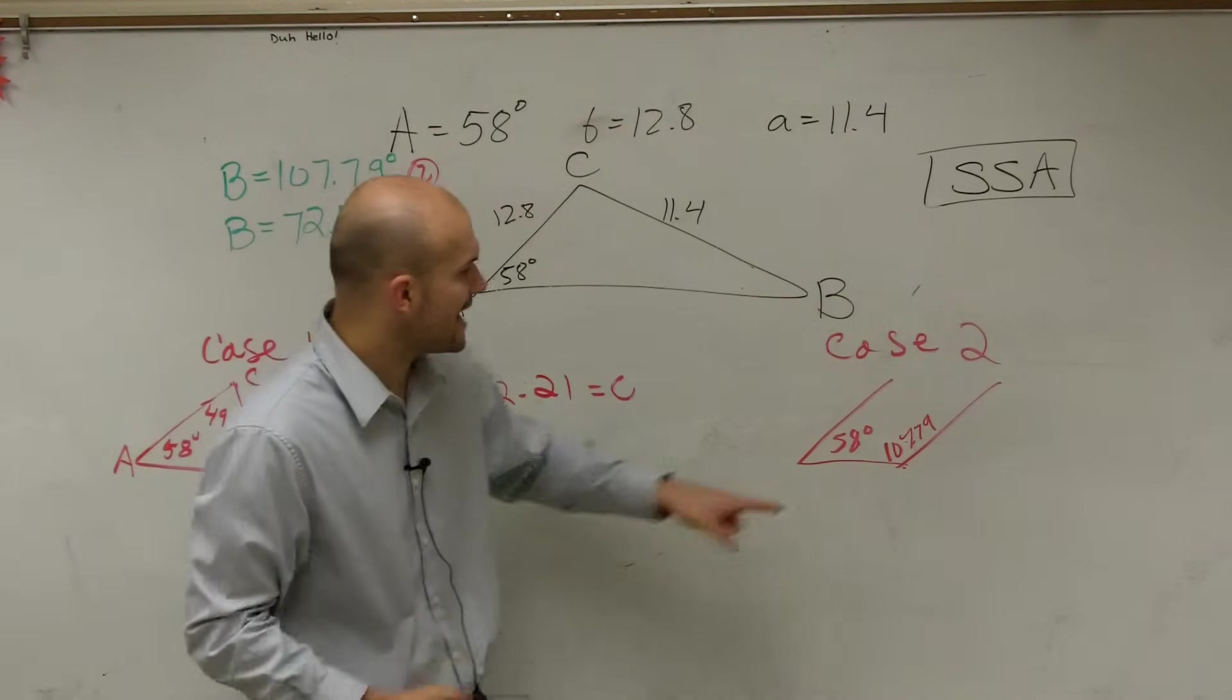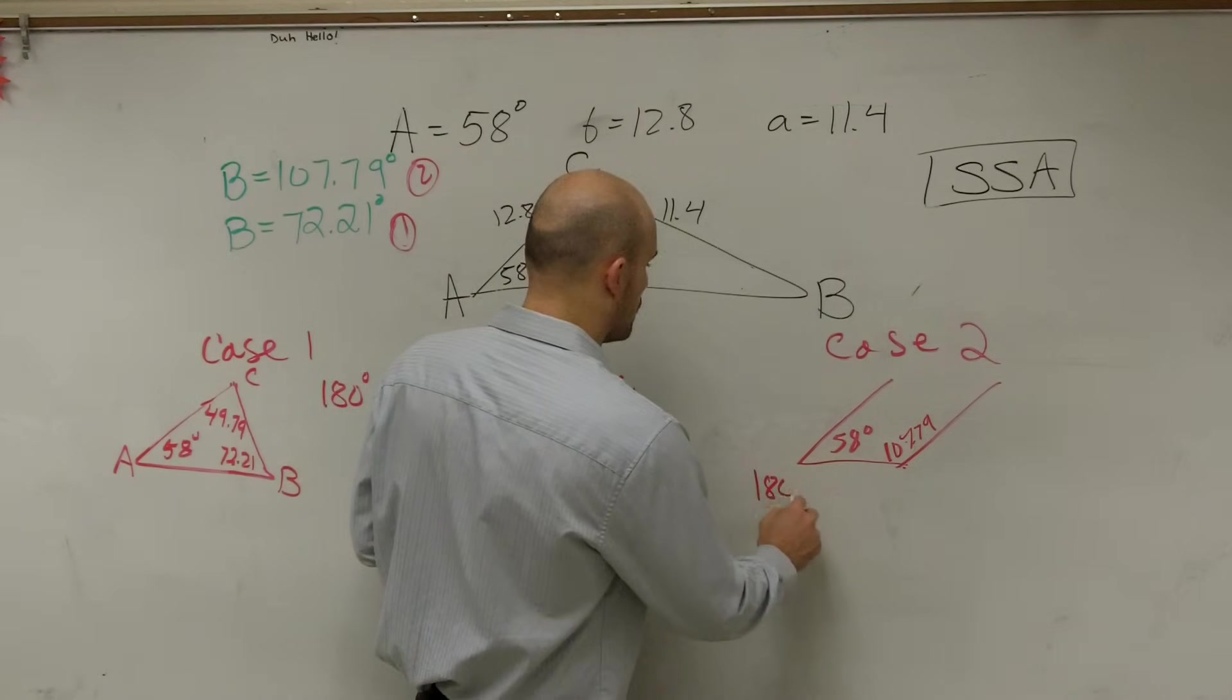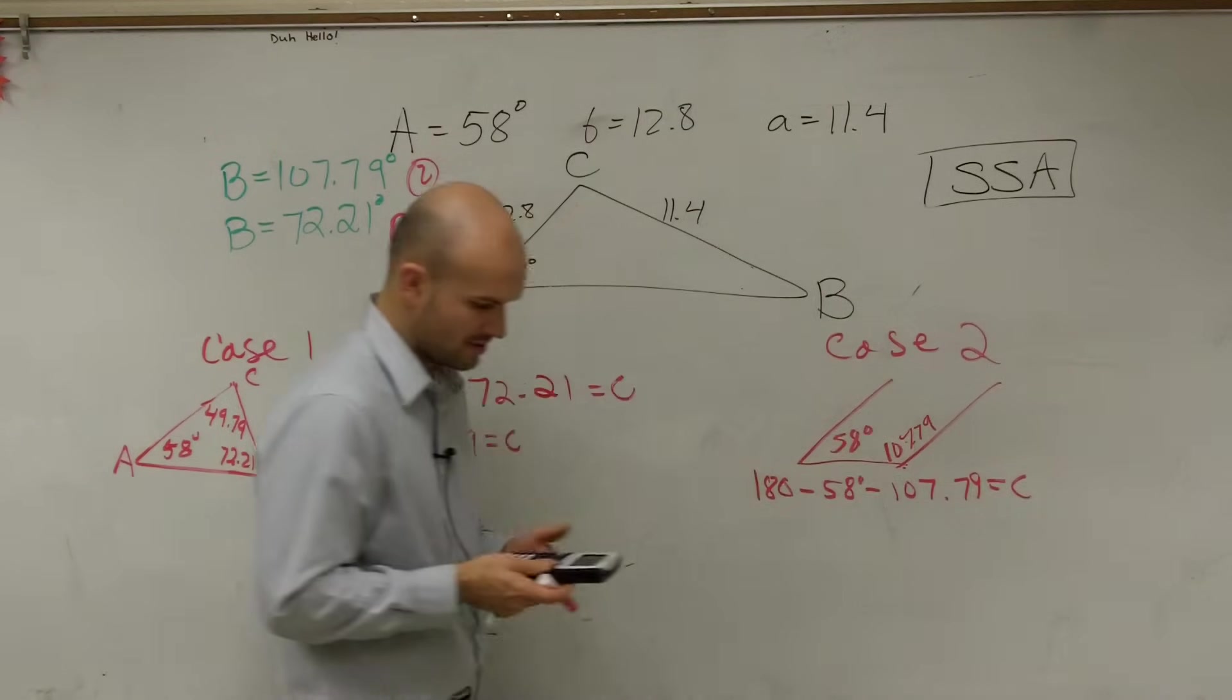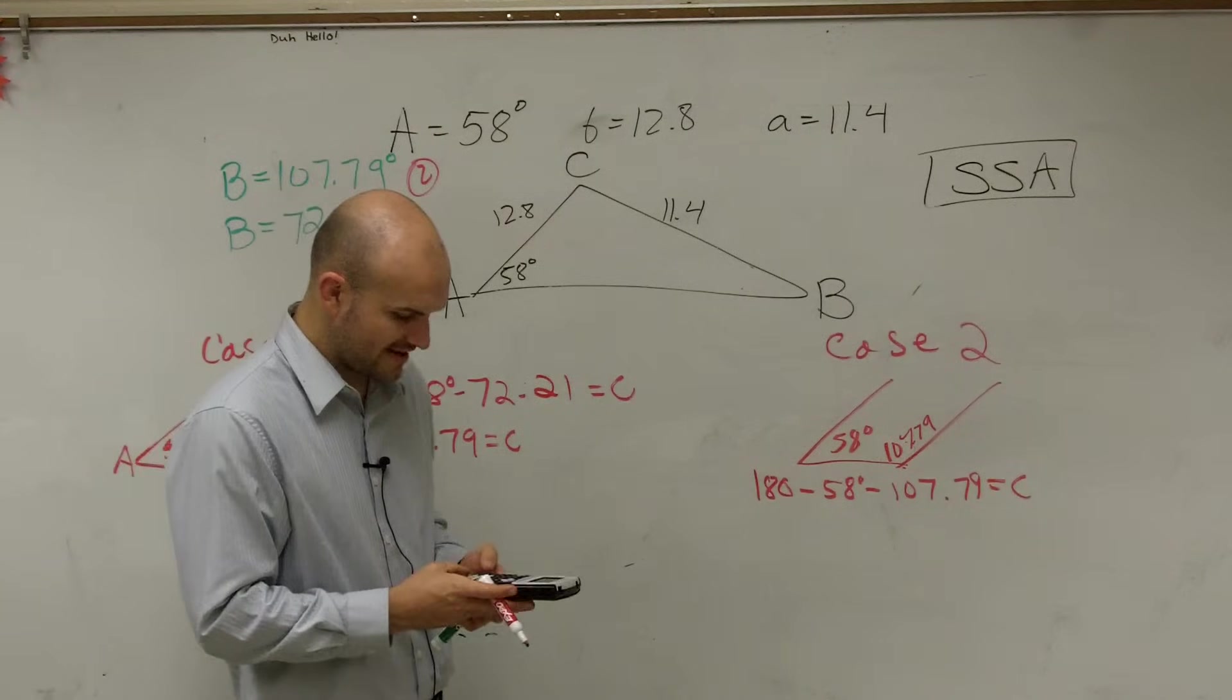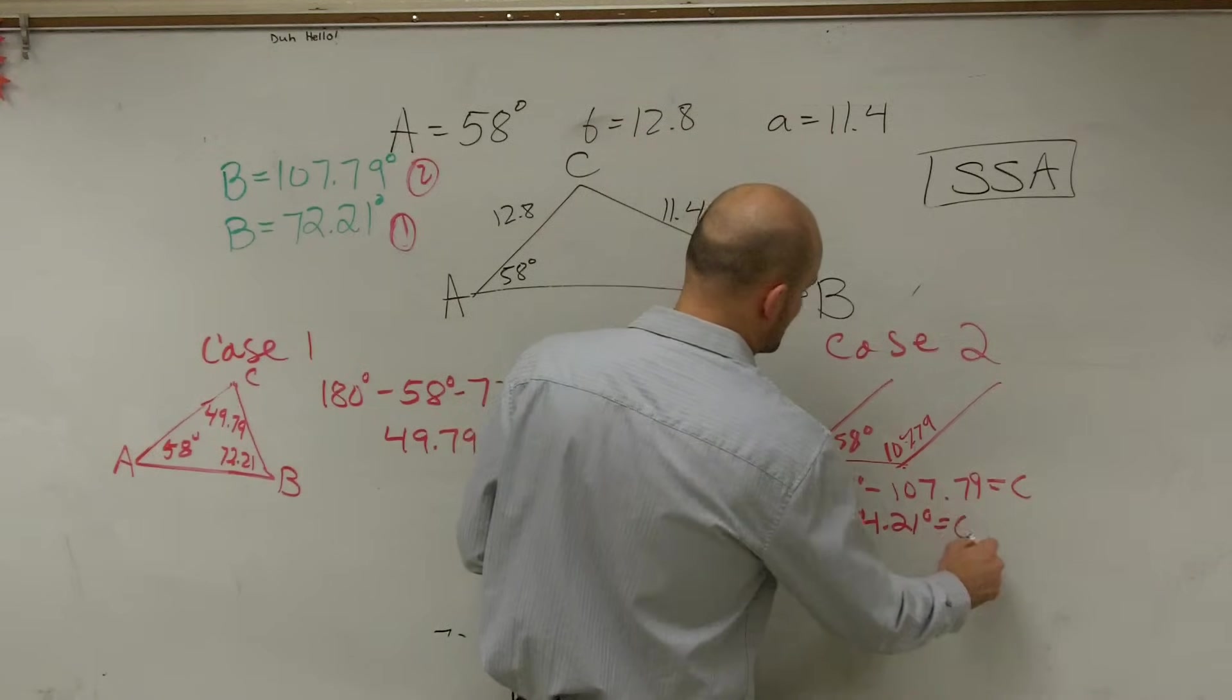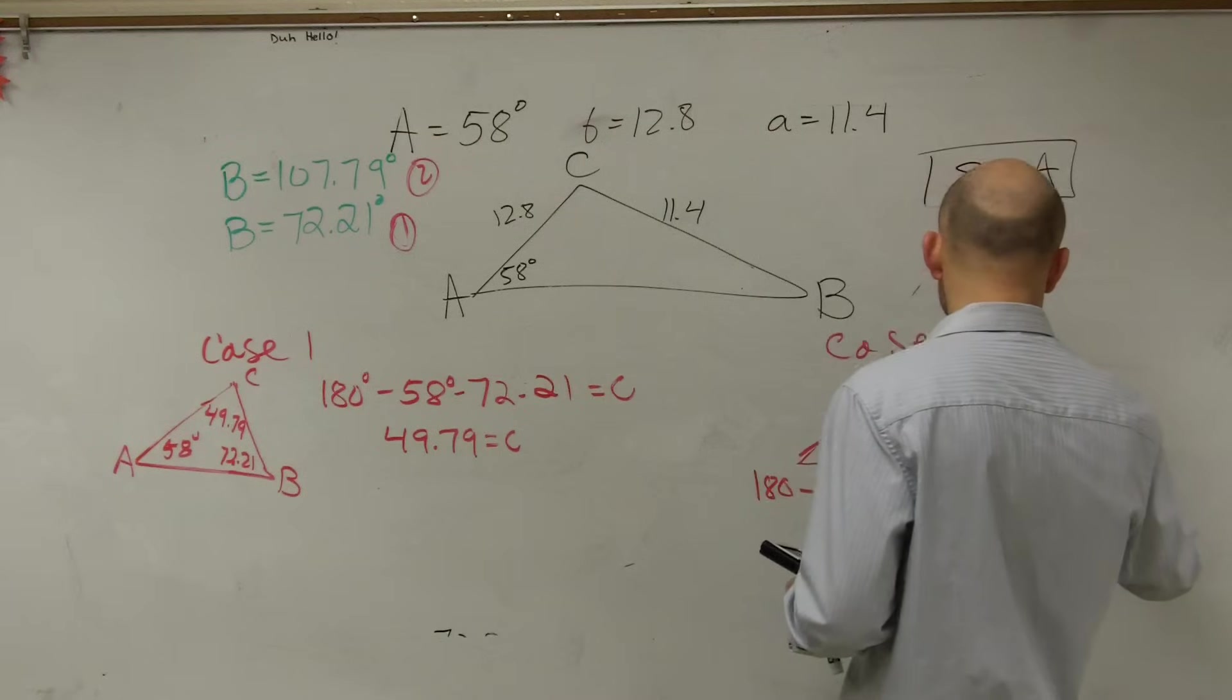What about case two? What if we said now, this is going to be 107 degrees. This is 58 degrees. Is it still possible to create this second triangle? So what I do for this C is I do 180 minus 58 degrees minus 107.79 degrees equals C. So we do 180 minus 58 minus 107.79. And guess what? I get 14.21. So I could say 14.21 degrees equals C. And I know my triangle is kind of looking a little crazy, guys, but it would probably just be something like that. So we could say this angle is 14.21.